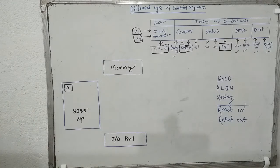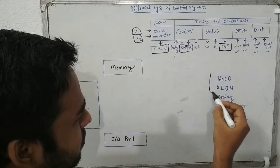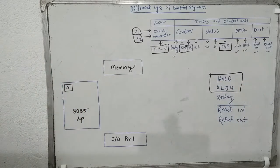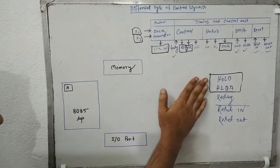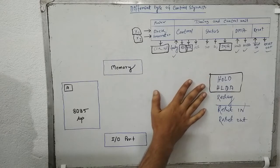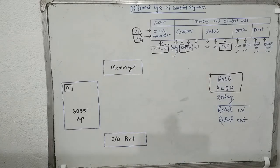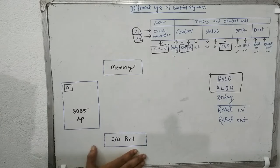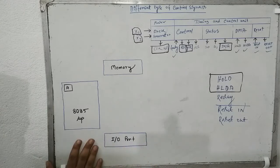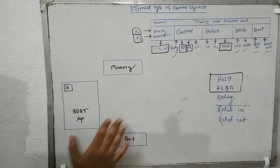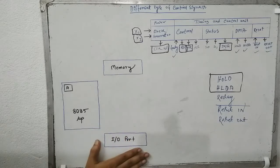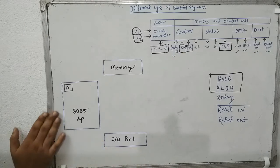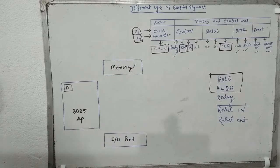To understand the significance of these two signals — HOLD and HLDA — we will describe a process. Here I have depicted a block diagram that you are quite well known with. This is a CPU, this is an input port, this is a microprocessor, and this is a memory.